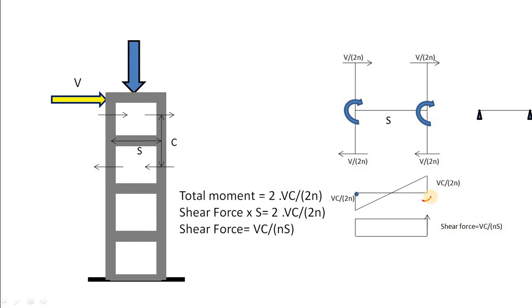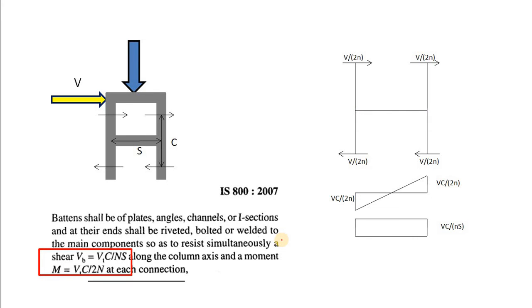We need to design the batten for this moment. As the bending moment is not constant, there must be a shear force acting in the batten. Take moment about any end—as both are clockwise, total moment is this. If we take moment of reaction force about this point, it should counter the total moment. Equating both equations, we get shear force as this one. If you use IS 800, you can see it suggests the same formula for which we should design our batten.